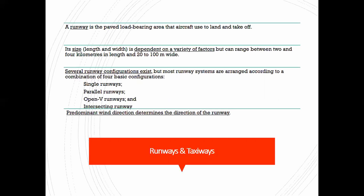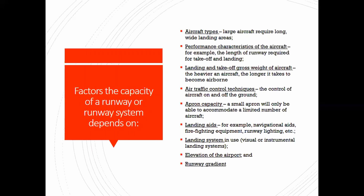Now we'll talk about the runway — one of the most important things. A runway is a paved, load-bearing area that aircraft use to land and take off. Its size is dependent on a variety of factors, and several runway configurations exist: single runway, parallel runway, open V runways, and intersecting runways. Predominant wind directions determine the direction of the runway — as someone taking off in a plane, you want to go into the wind.